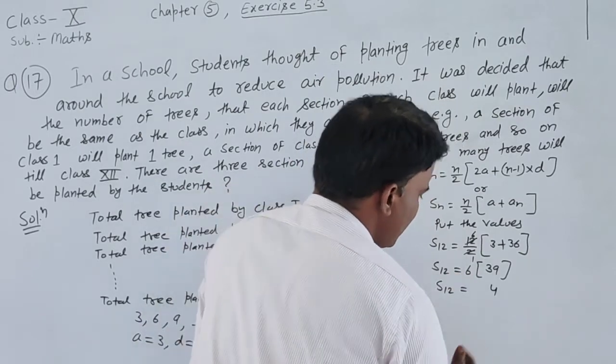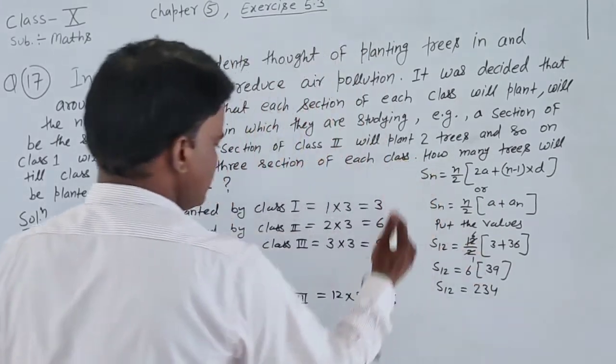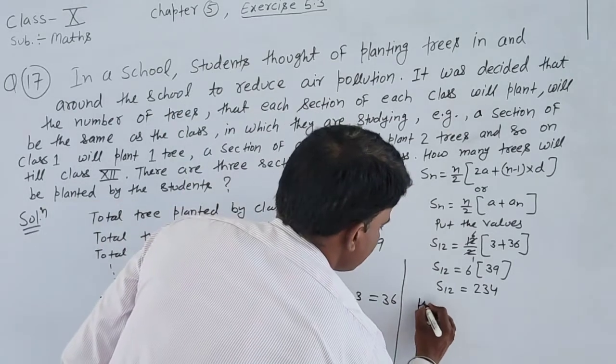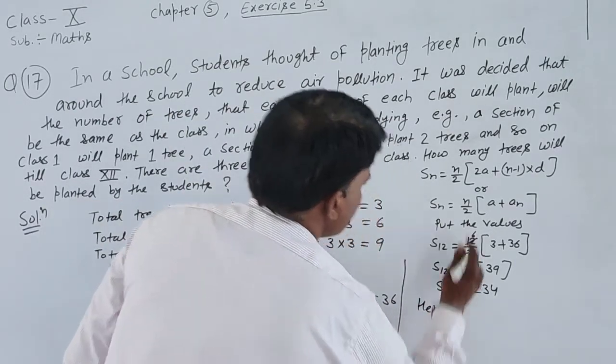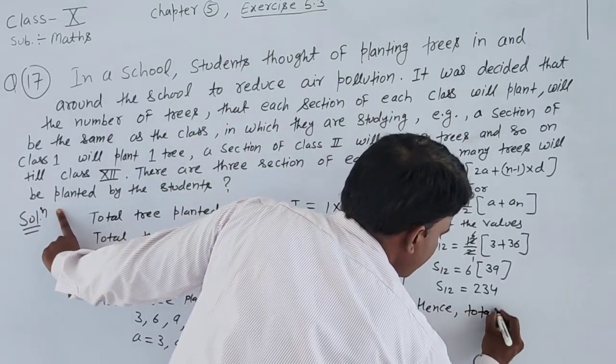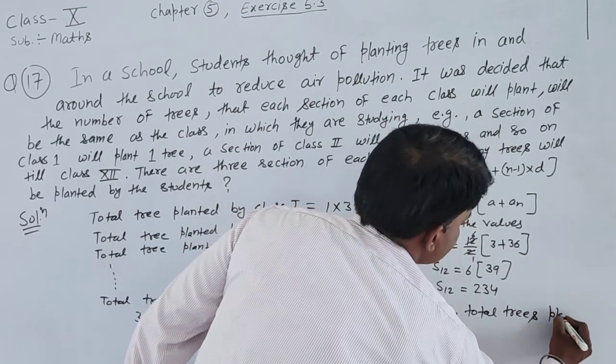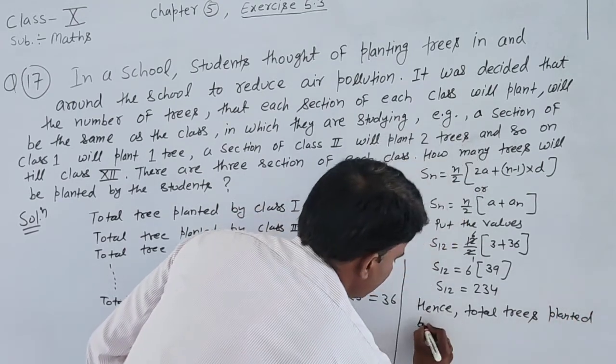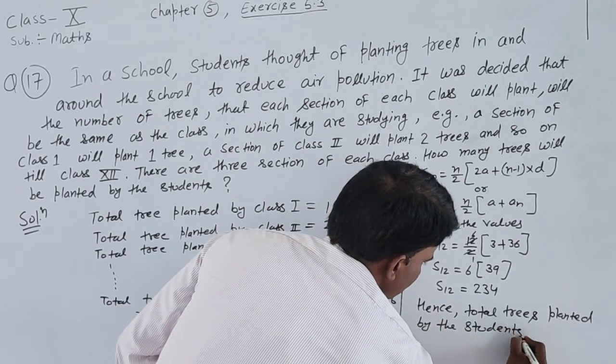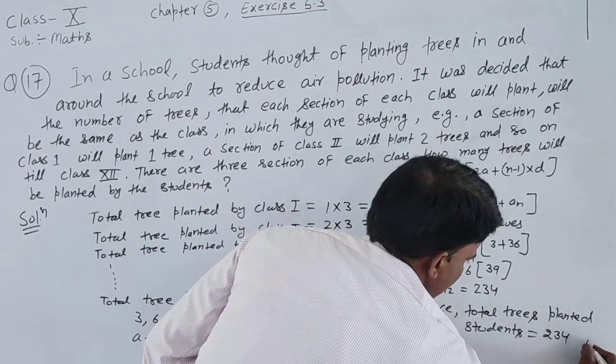6 times 3 equals 18, plus 5 equals 23, giving us 234. Therefore, the total trees planted by the students is equal to 234.